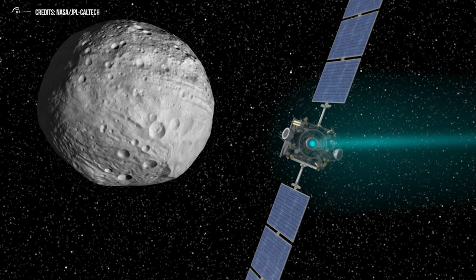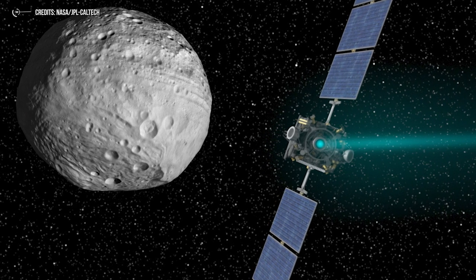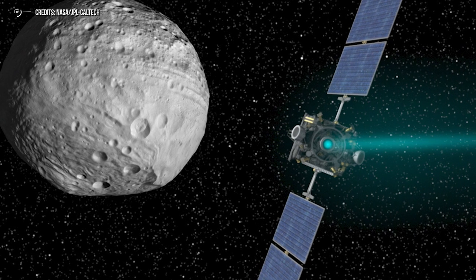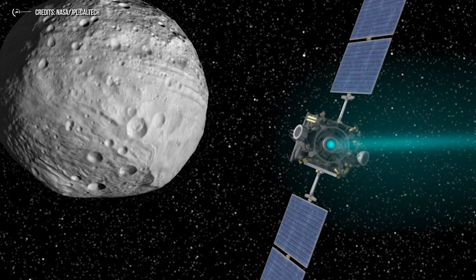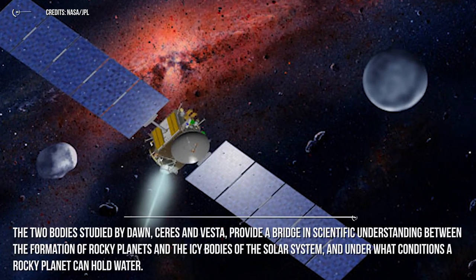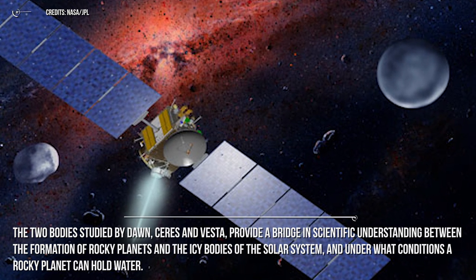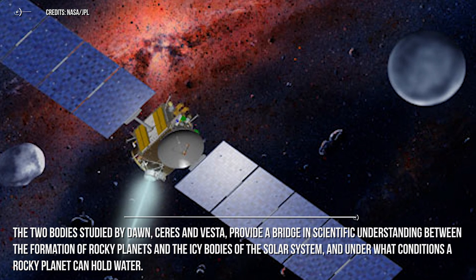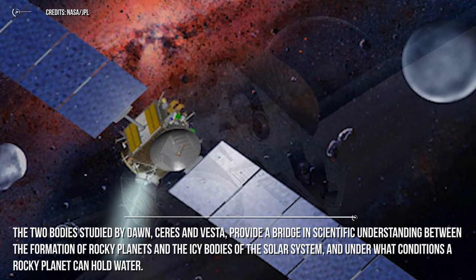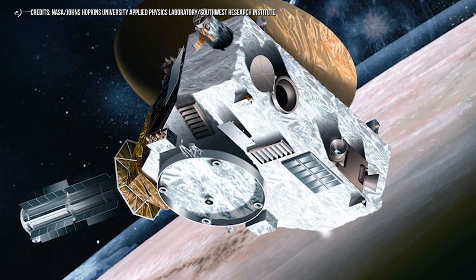Dawn was also the first NASA exploratory mission to use ion propulsion, which enabled it to enter and leave the orbit of two celestial bodies. Previous multi-target missions using conventional drives, such as the Voyager program, were restricted to flybys. The two bodies studied by Dawn, Ceres and Vesta, provide a bridge in scientific understanding between the formation of rocky planets and the icy bodies of the solar system, and under what conditions a rocky planet can hold water. The second probe to ever visit a dwarf planet was New Horizons, which was launched towards Pluto.